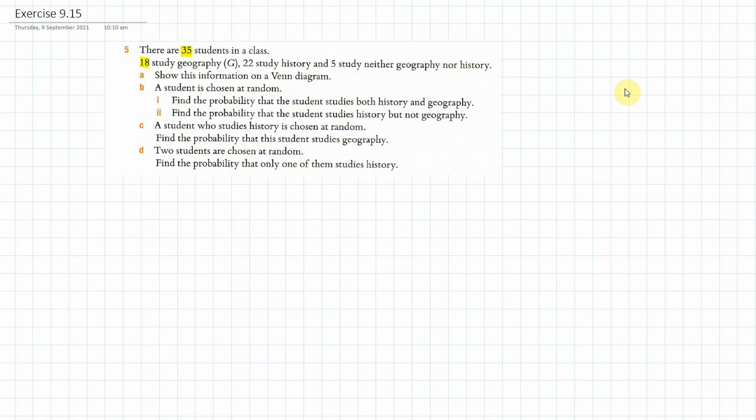35 students in the class. We've got 18 studying Geography, 22 studying History, and five studying neither Geography or History. I'm going to show this in a Venn Diagram.